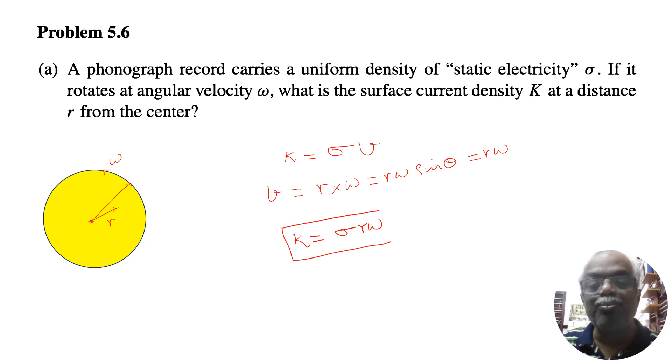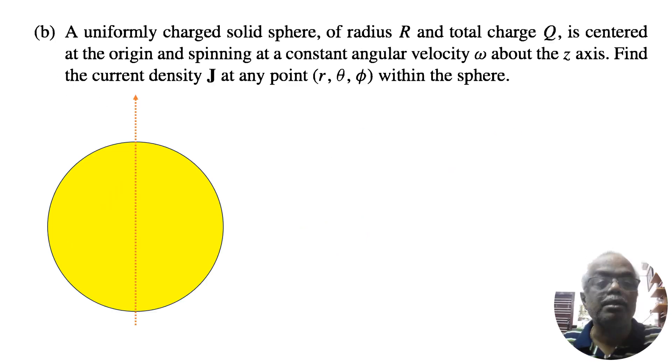Now we will move on to part B of this. Now part B is a uniformly charged solid sphere. Remember that it is three dimension. It is a solid sphere of radius R and the total charge Q is centered at the origin and spinning at constant angular velocity omega along the z direction. That axis I have shown, axis of rotation. Find the current density at a point (r, θ, φ) within the sphere. So this is axis of rotation. It is rotating like this. Then let us say this is the center, center point.